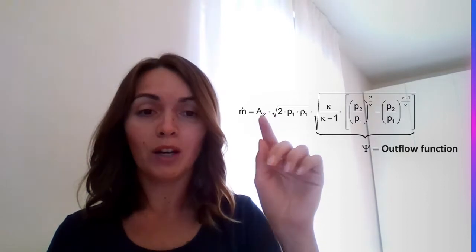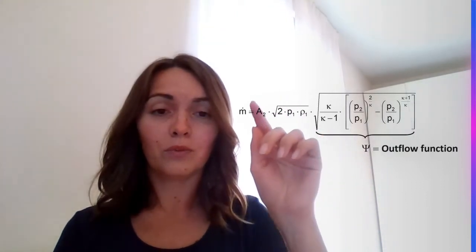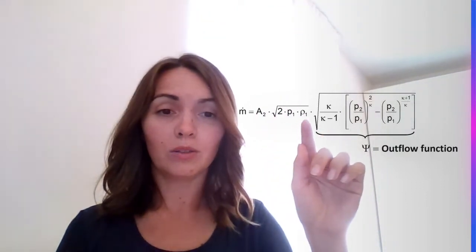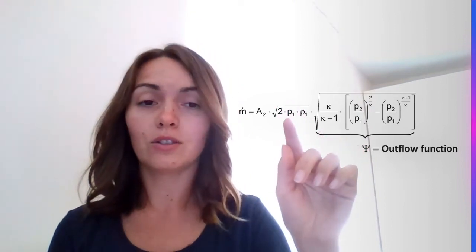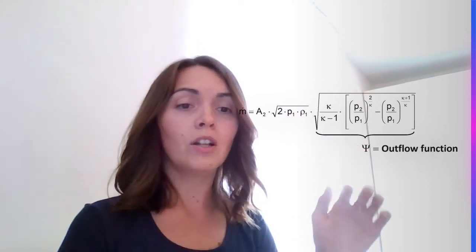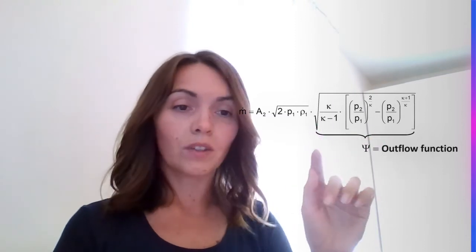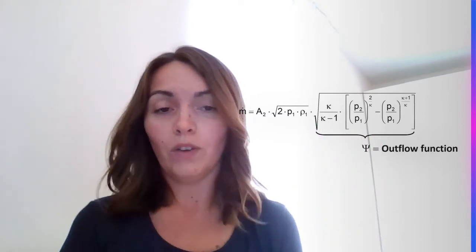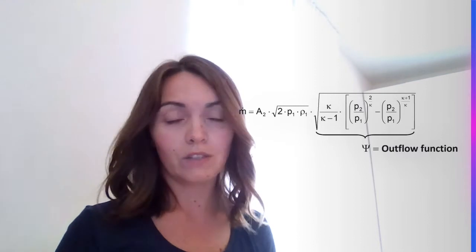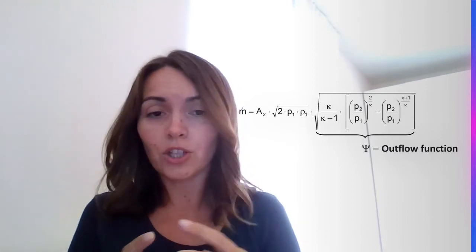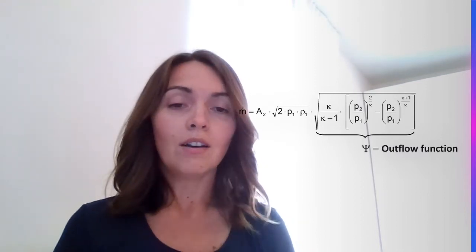So what we have here? We have here surface, we have here density and pressure level, and we have this beautiful thing that also depends on the velocity. We call it outflow function. So you can find different names of this function, but it's usually just this flow characteristic function.